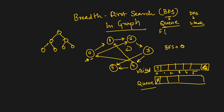The queue is first-in-first-out, so the element that goes in first comes out first. We put all nodes reachable from 0 into the queue — that is 1 and 2. We mark 1 and 2 as visited. Then we take out 2 and add it to the BFS result, and put all nodes reachable from 2 into the queue. From 2 we can visit 3, so we put 3 and mark it visited.